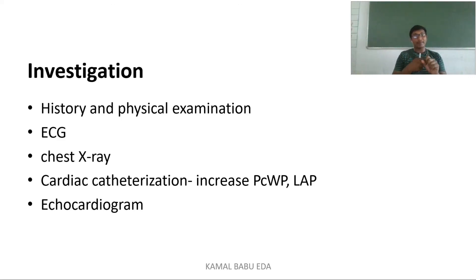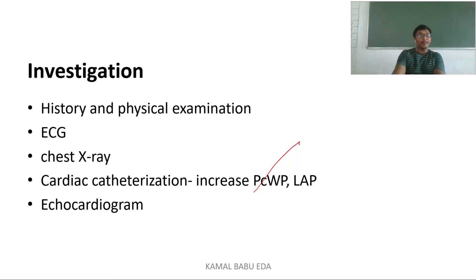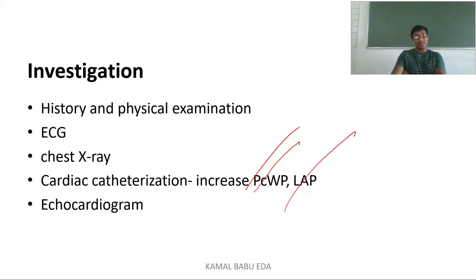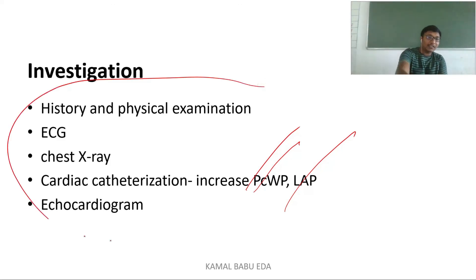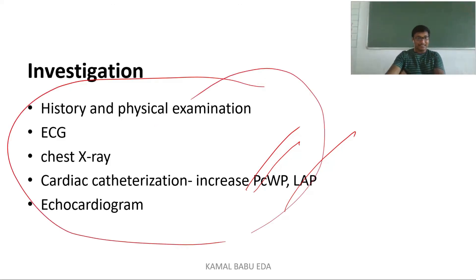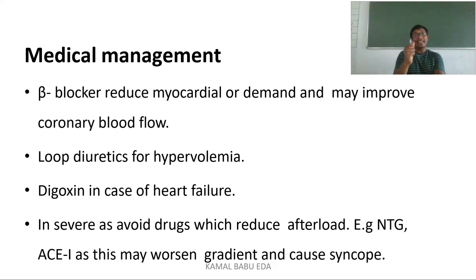Investigations include history and physical examination, ECG, chest X-ray, and cardiac catheterization — mainly to measure pulmonary capillary wedge pressure and left atrial pressure — and echocardiogram. These investigations are performed not only for aortic stenosis but generally for all valvular heart diseases.